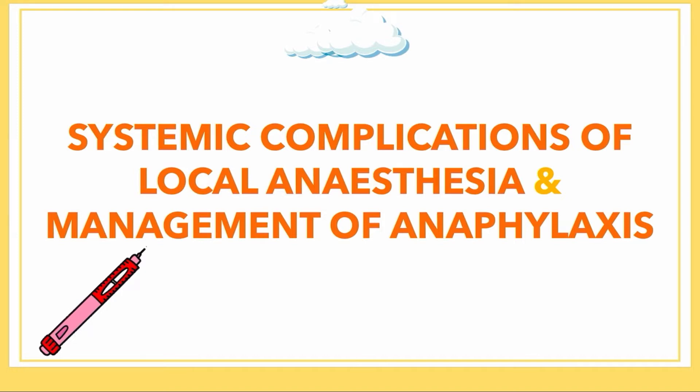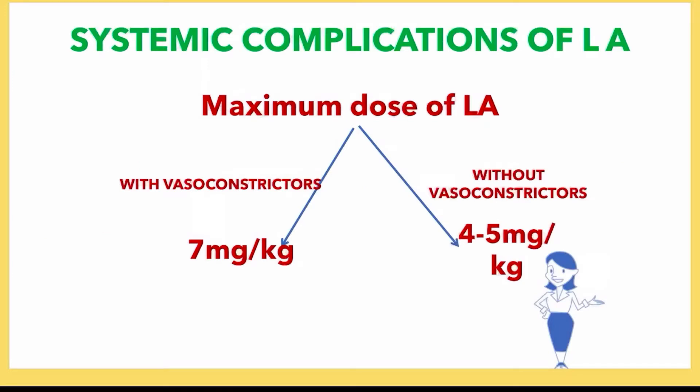There are two types of local anesthetics: with vasoconstrictors and without vasoconstrictors, that is with or without epinephrine. In case of local anesthetic solution with vasoconstrictor or with epinephrine, the allowed dose is 7 mg per kg body weight. Without epinephrine or vasoconstrictor, it is 4 to 5 mg per kg body weight of the patient.